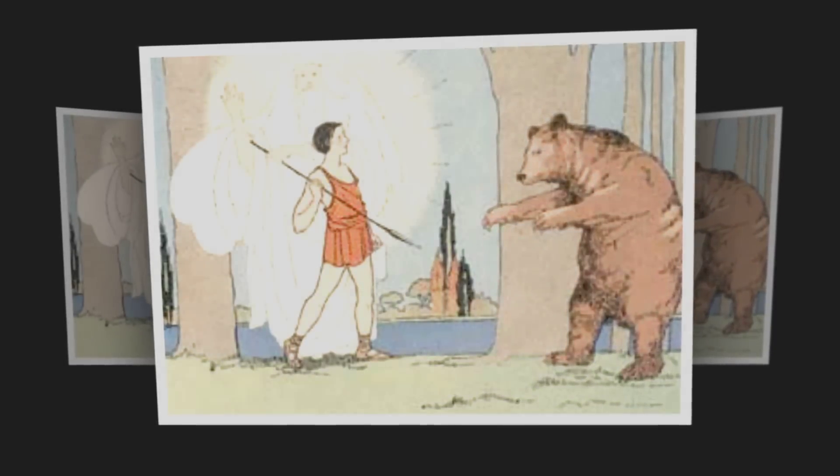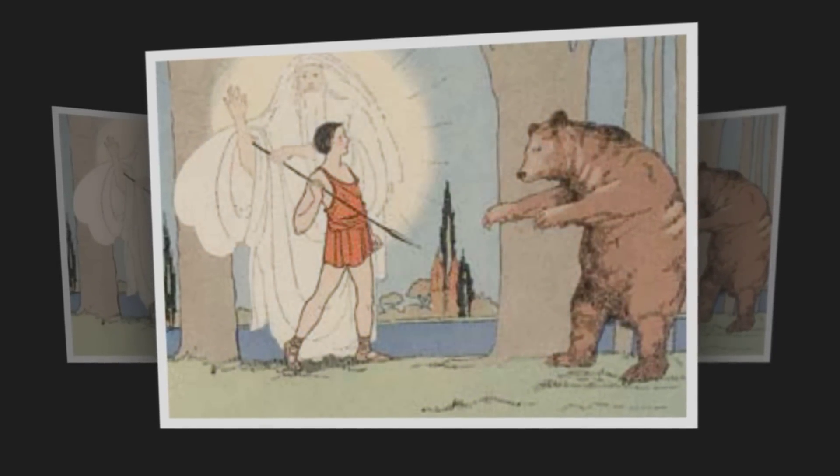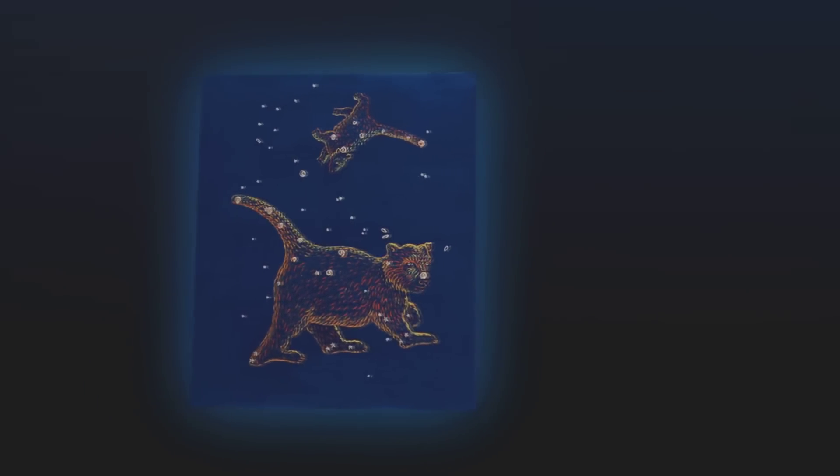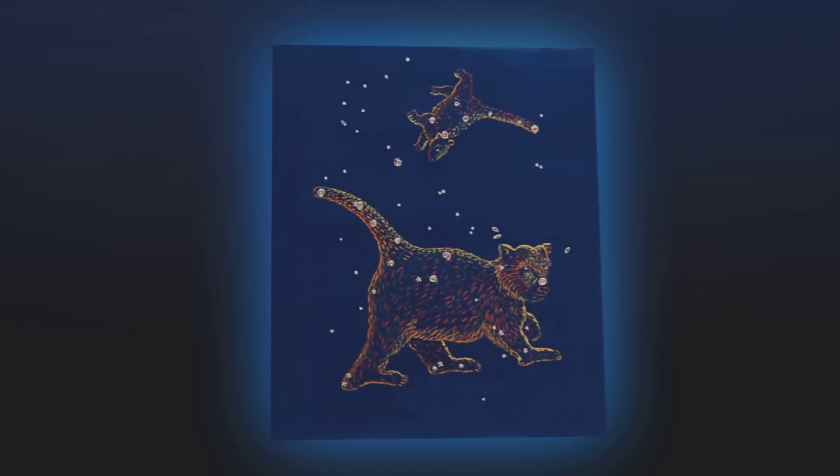Scared, Arcus drew a spear, ready to kill the bear. Luckily, Zeus saw the scene and intervened before it was too late. He sent a whirlwind that scooped the mother and son up to the heavens, where Callisto became Ursa Major and Arcus Ursa Minor.